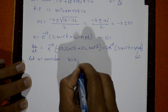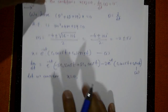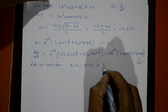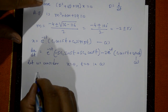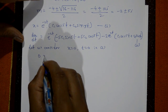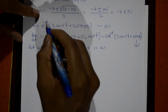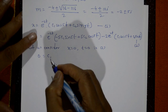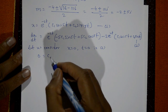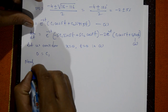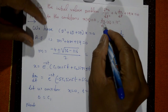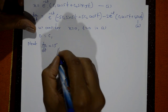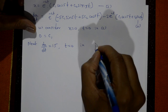Apply condition x = 0 at t = 0 in equation number one. Substituting: 0 = e^0(c₁ cos 0 + c₂ sin 0) = 1·(c₁·1 + c₂·0). Therefore c₁ = 0.